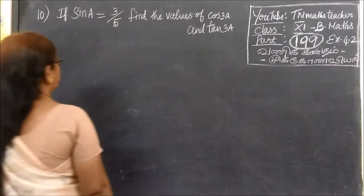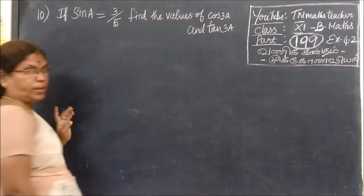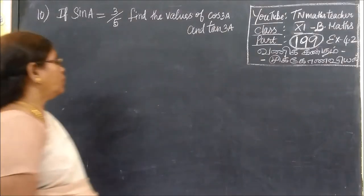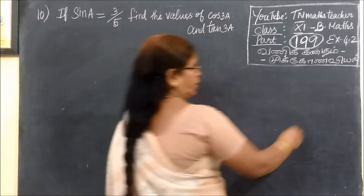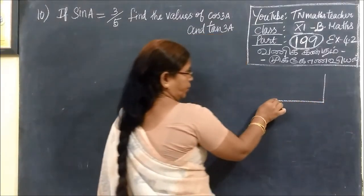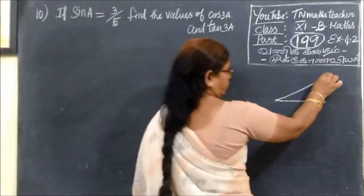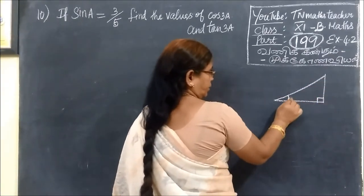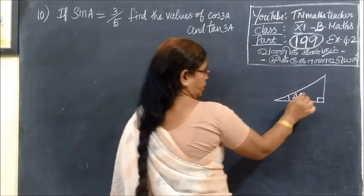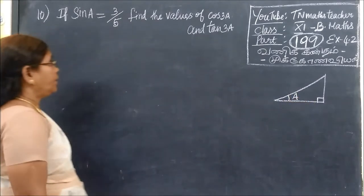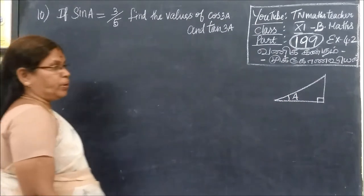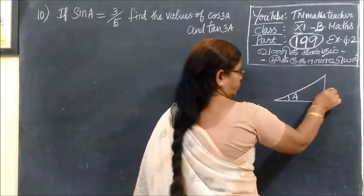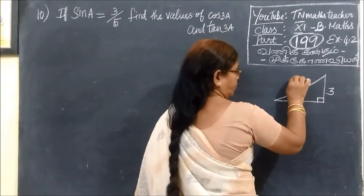Question No. 1: Where do you find sin A value? Where do you find the other value? The first value is the one. This is the right angle triangle. Sin A is opposite by hypotenuse.